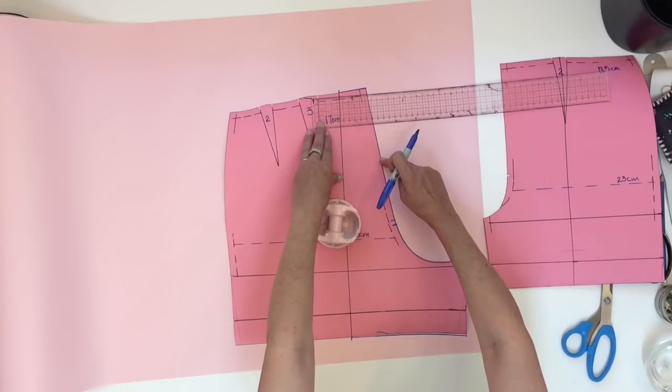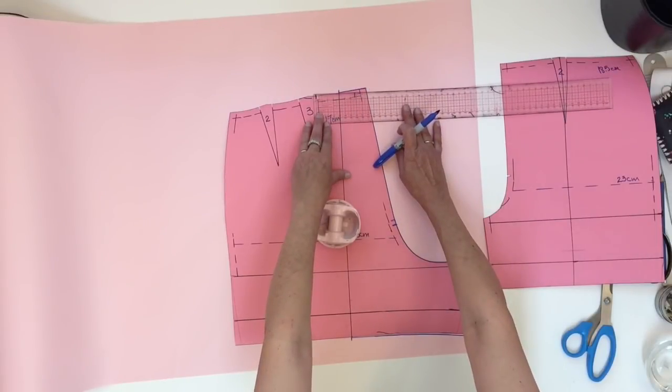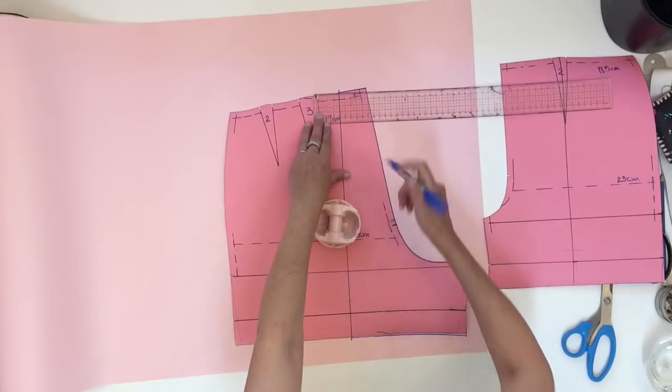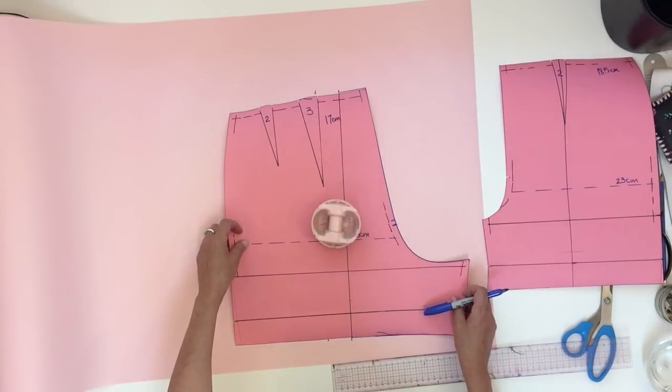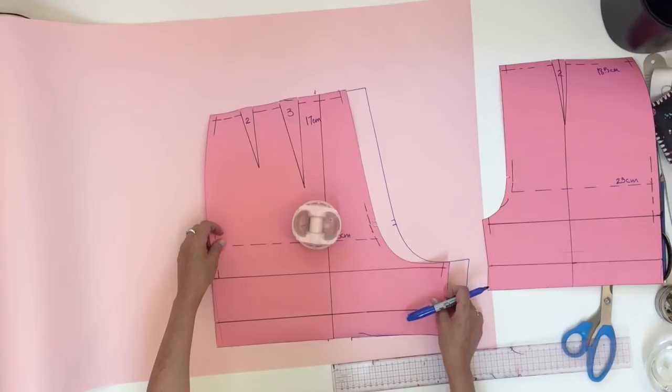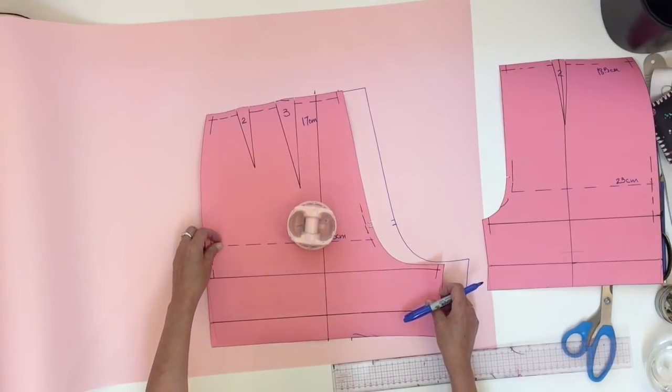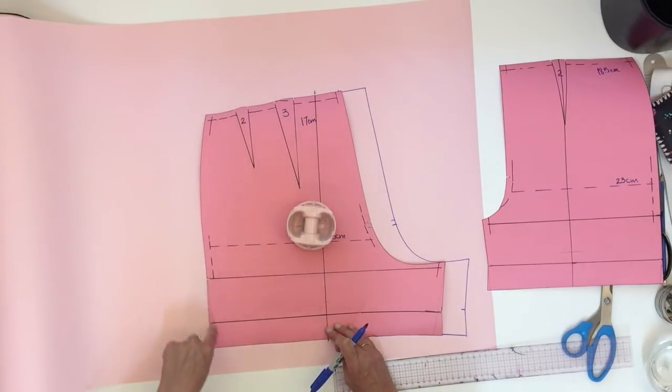Once the first part is traced, we mark the four centimeters on the top and at the bottom. Then you could move your pattern until the new reference and trace the second part.